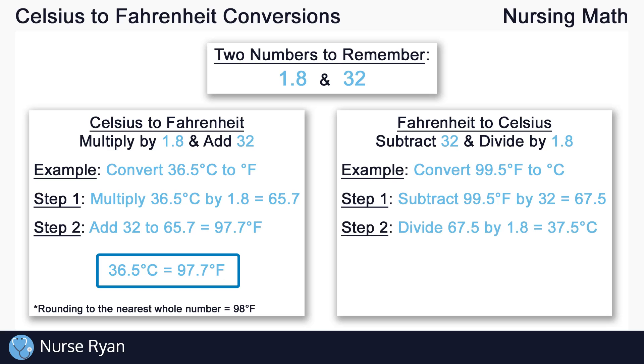Then, instead of multiplying, we divide 67.5 by 1.8, giving us a result of 37.5. And that's that. 99.5 degrees Fahrenheit is equal to 37.5 degrees Celsius.